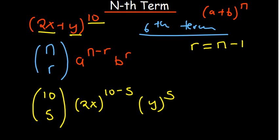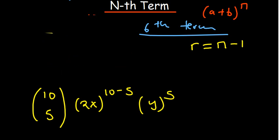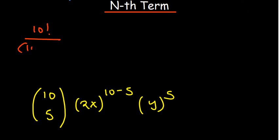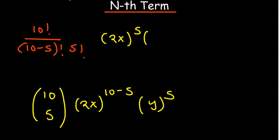At this point, simplifying C(10,5) shouldn't be a struggle. If a calculator is allowed, that's easier. But if not, we write it as 10 factorial over (10 minus 5) factorial times 5 factorial, multiplied by (2x) to the power 5, and y to the power 5.